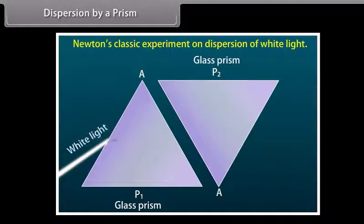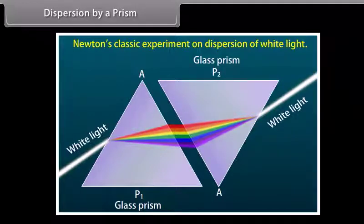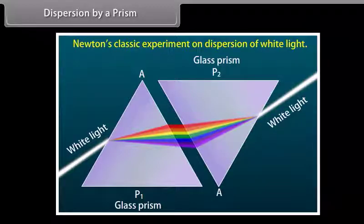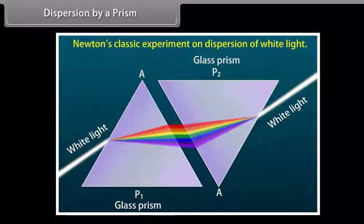Newton's classic experiment on dispersion of white light: Sir Isaac Newton placed a second prism P2, inverted in position, in front of prism P1. The emergent beam from P1 fell on P2, and the emergent beam from P2 was white light, demonstrating that dispersion is reversible.